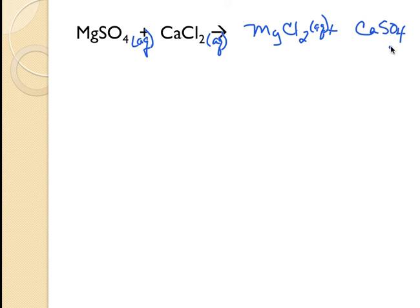And then calcium sulfate. My sulfate is soluble, except when it's with calcium. And my kitty cat is on my solubility rules. Except when it's with silver, lead, calcium, strontium, or barium. So, this is my precipitate. Checking to see if it's balanced. It is balanced. Okay, so this is my molecular equation.